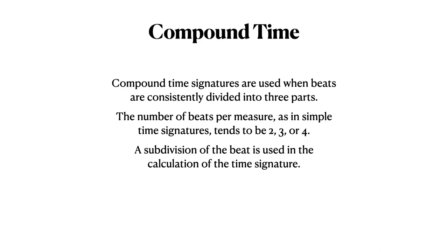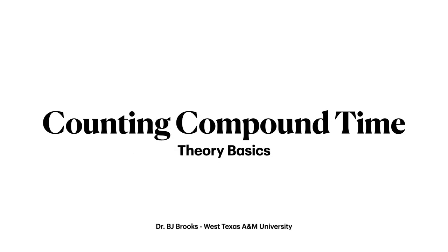In summary, it's important to know that when beats are consistently divided into 3 parts, a compound time signature is often used. In compound time signatures, the number of beats, as in simple time signatures, tends to be 2, 3, and 4. A subdivision of the beat is used when calculating a time signature. When you keep these things in mind, music written in a compound time signature is not that much of a mystery.